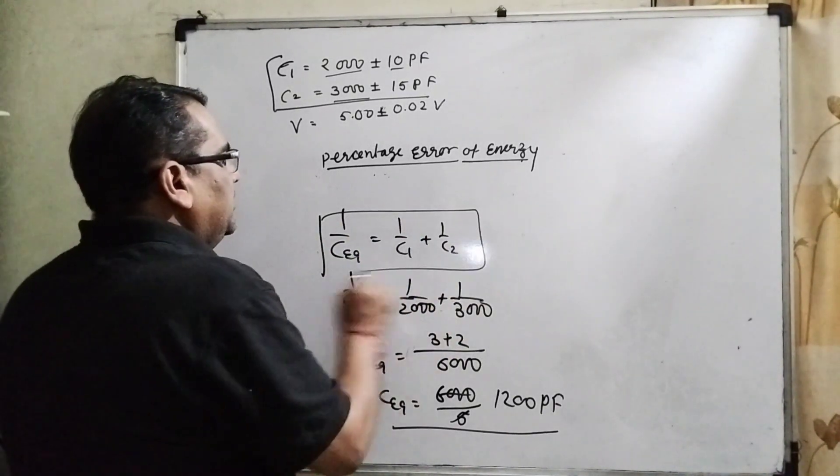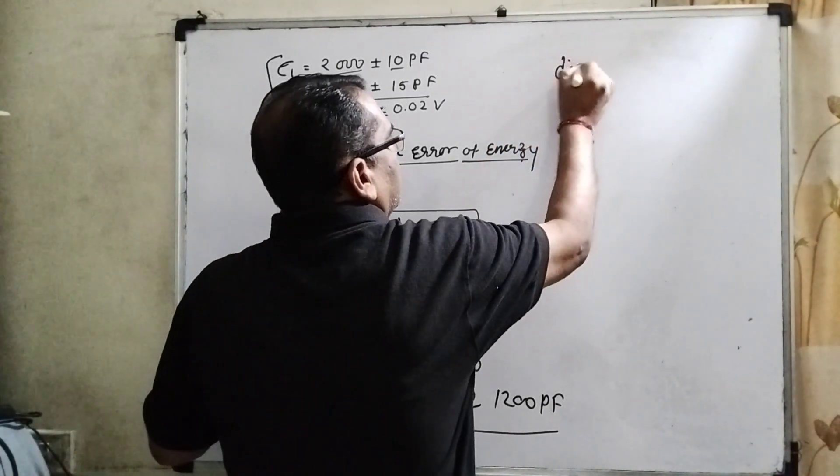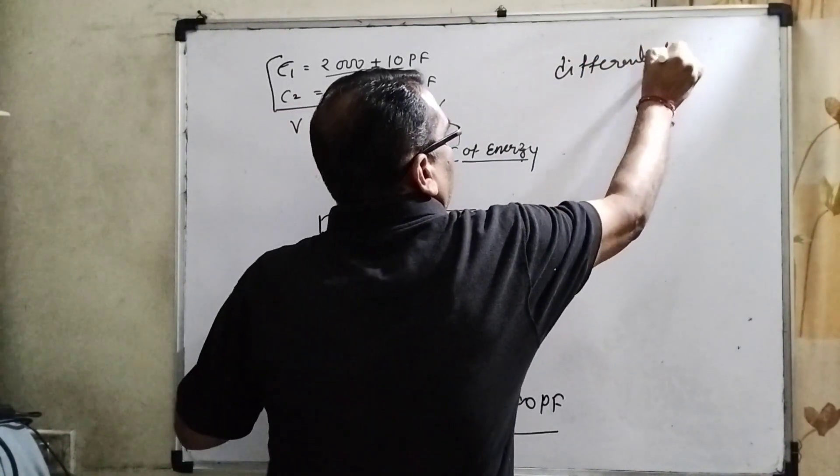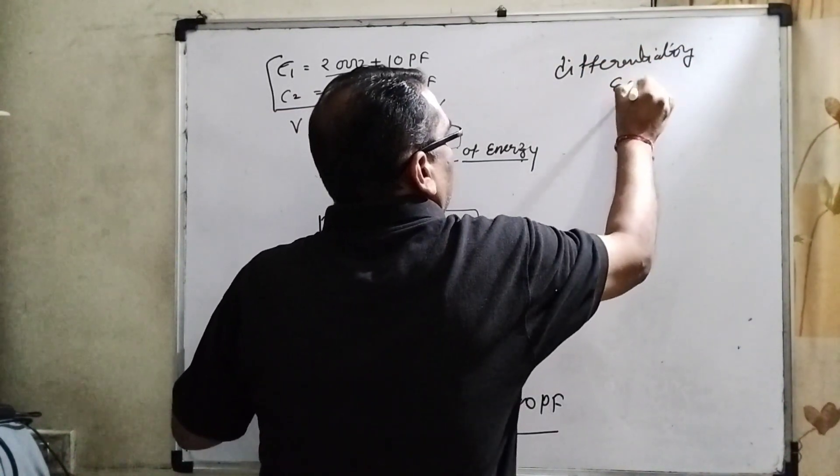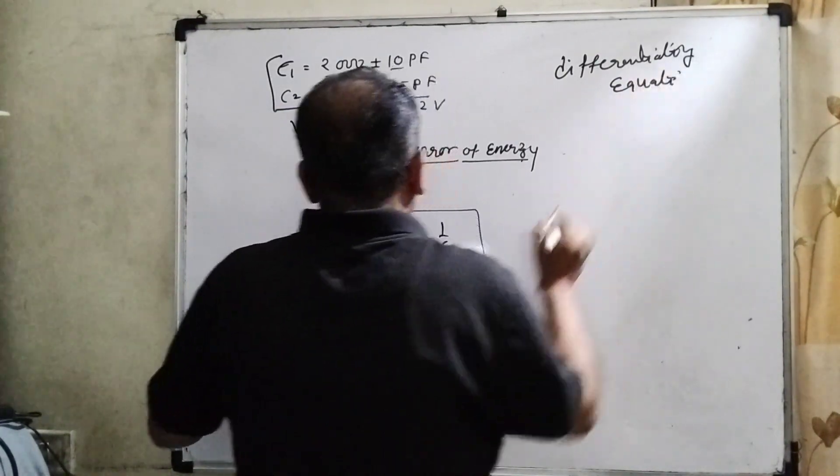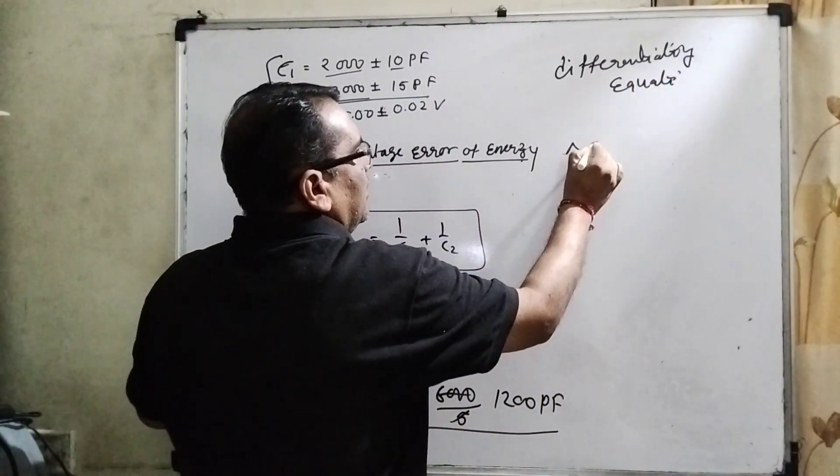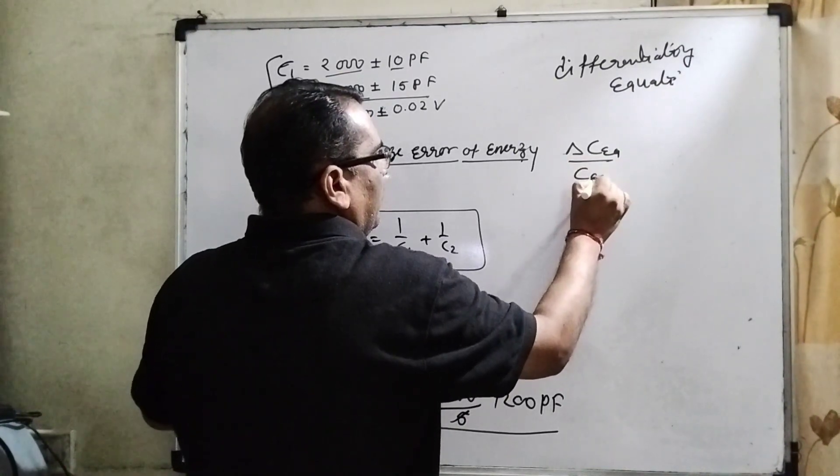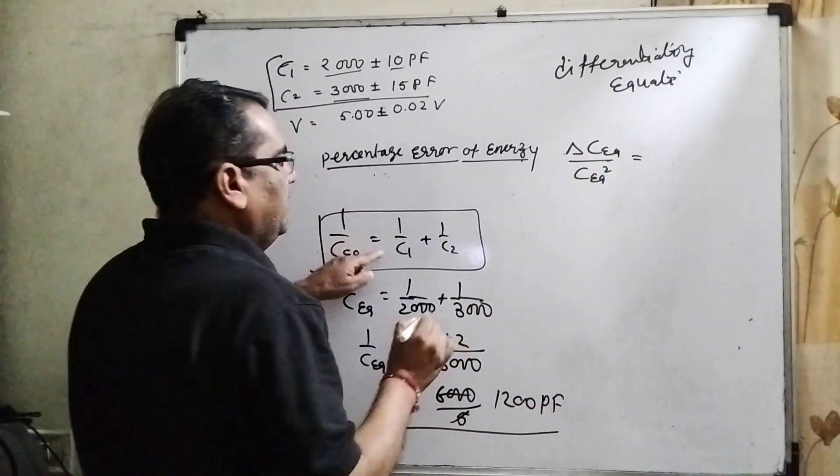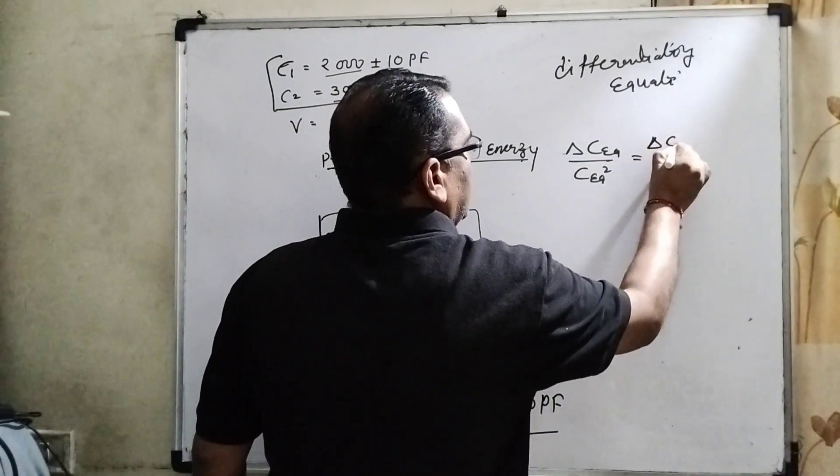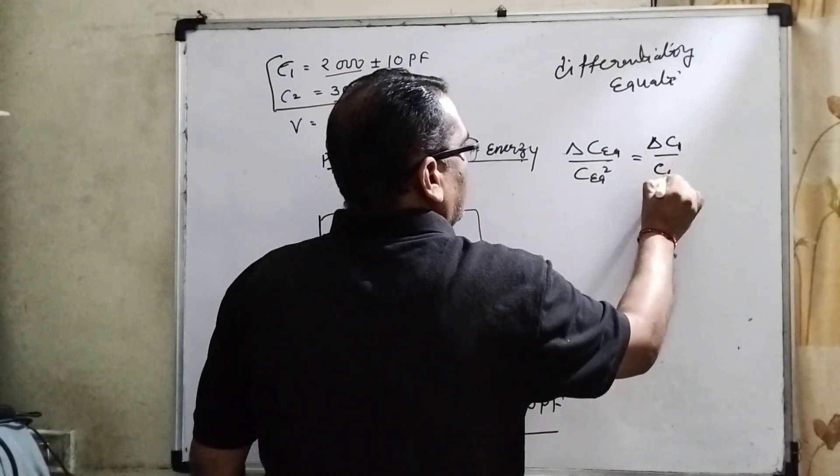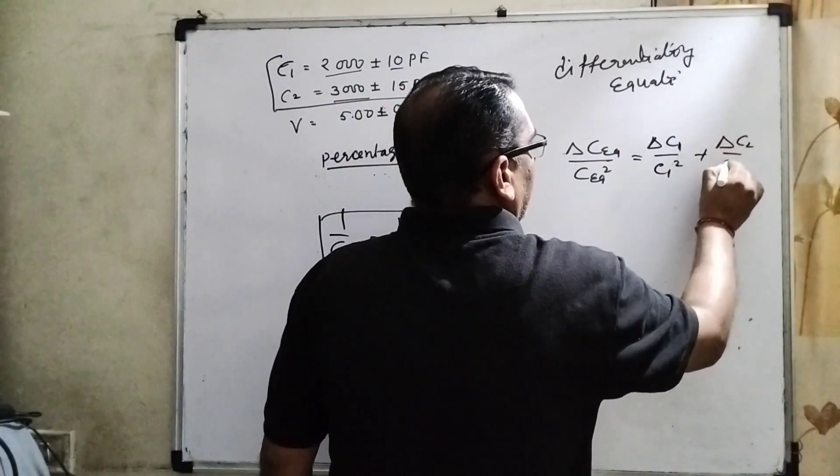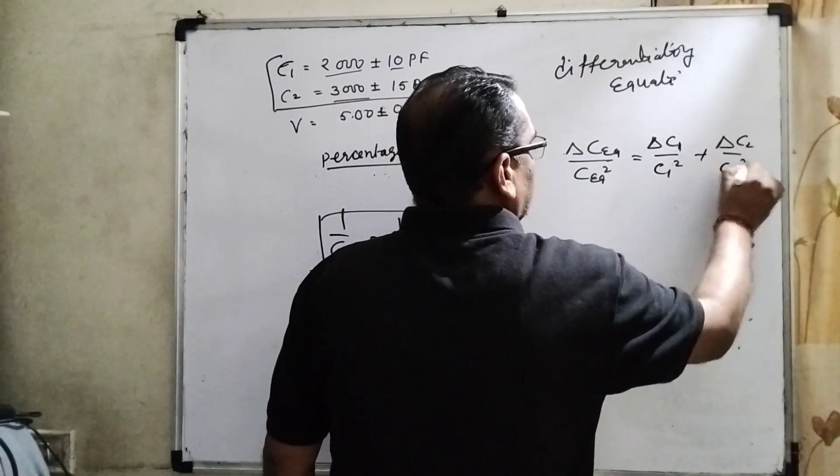Now differentiating this equation: delta C_eq upon C_eq squared equals delta C1 upon C1 squared plus delta C2 upon C2 squared.